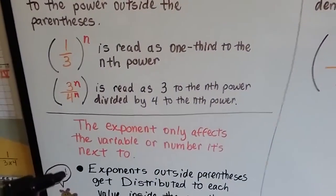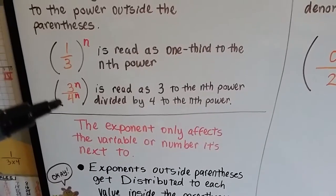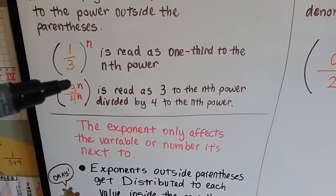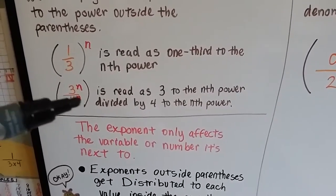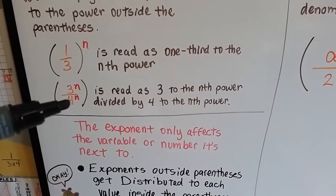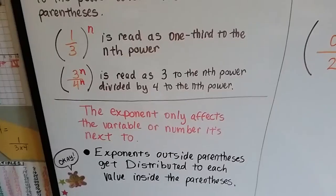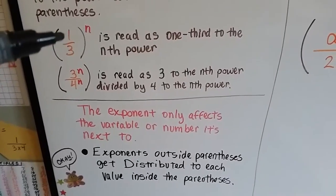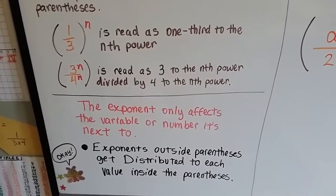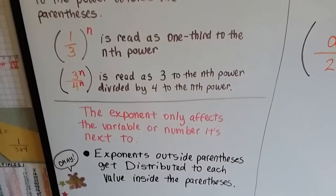And the exponent only affects the variable or number it's next to. So this variable only affects this numerator and this variable only affects this denominator. If the exponent is on the outside of the parentheses, it gets distributed to each of the values inside the parentheses.